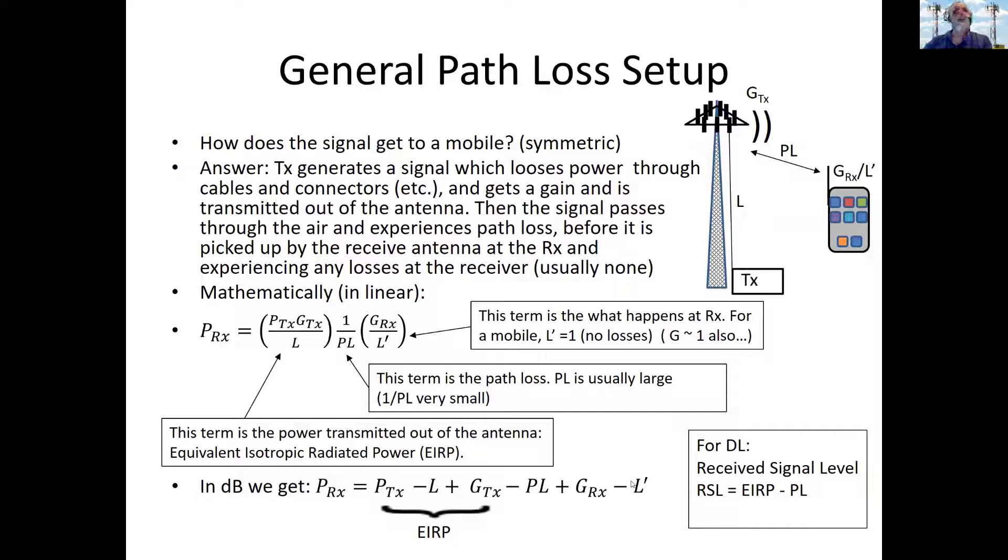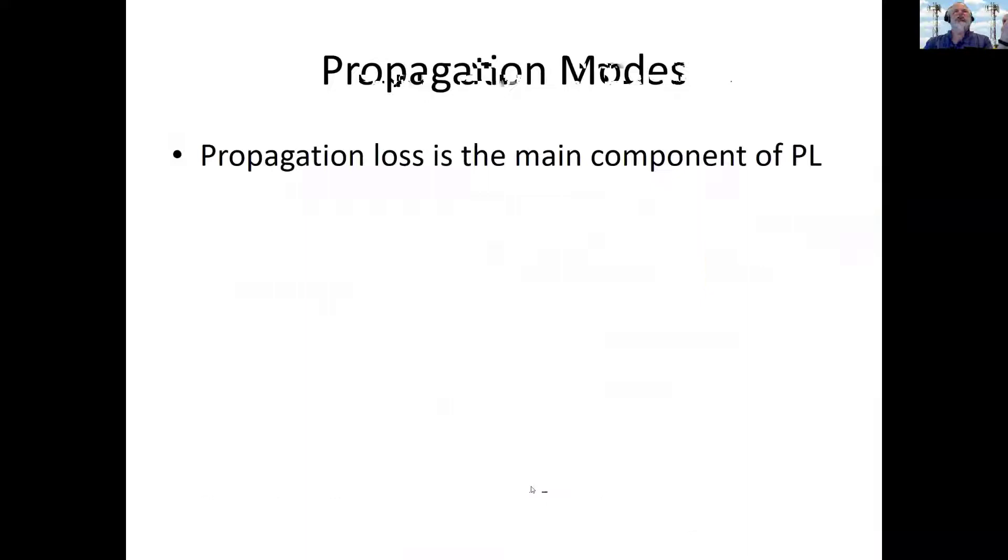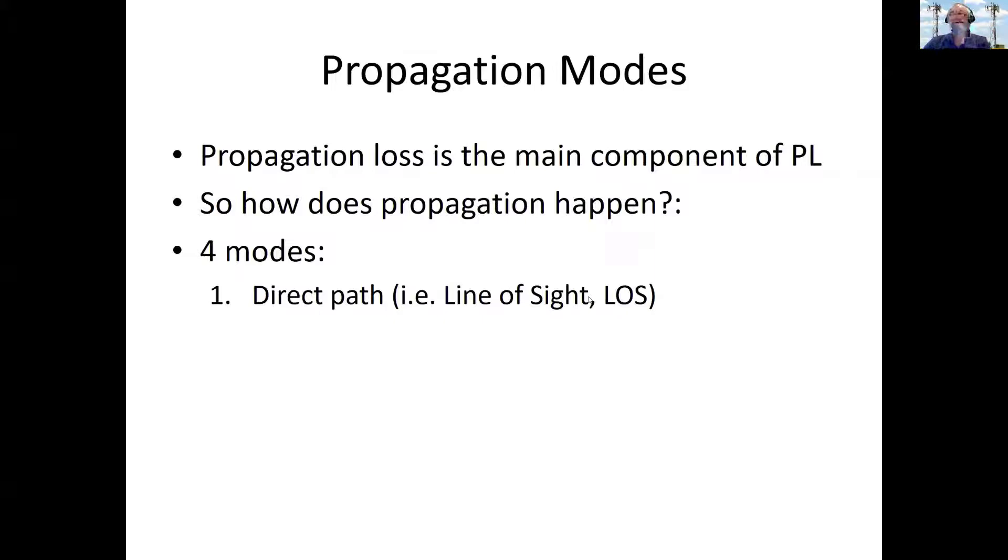So path loss is going to be the term we want to talk about. And the main component of path loss is going to be propagation. So how does propagation happen? Well, it's best to start with a simple model and try and build up from there. As a simple model, there would be just direct propagation from the antenna.